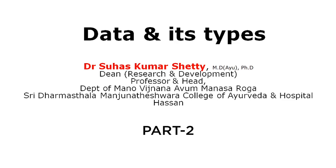Welcome to Part 2 of the lecture series 'Data and its Times.' In the previous part, we discussed what we mean by data, the basic features of ideal data, its connection with variables, and the types of variables: independent variable, dependent variable, and confounding variable. In this part, we are going to discuss in detail some of the basic types of data.